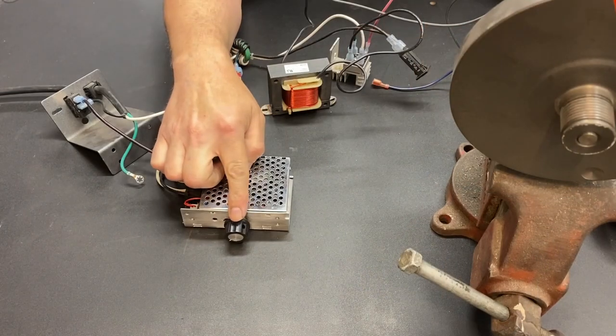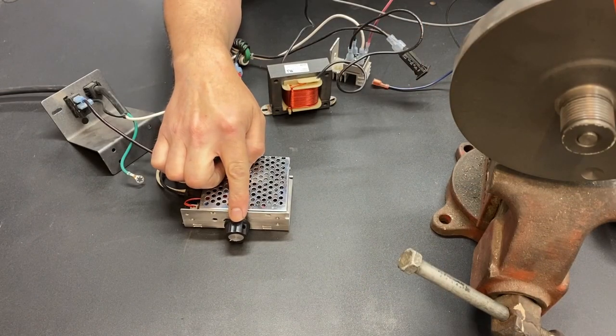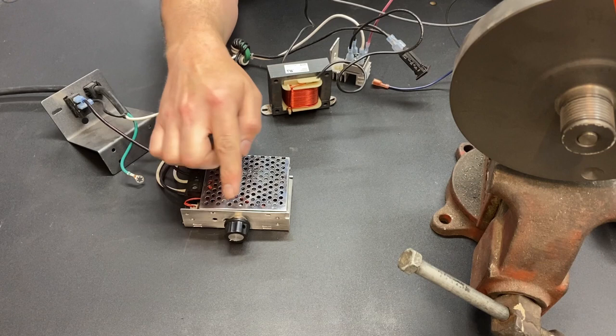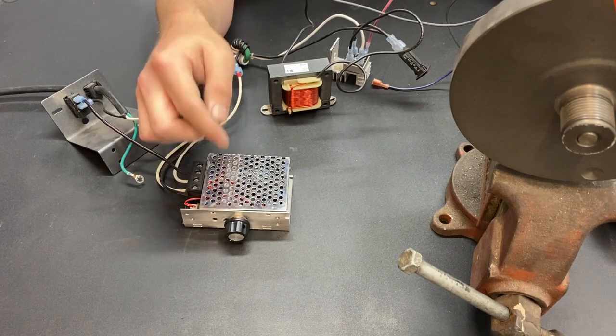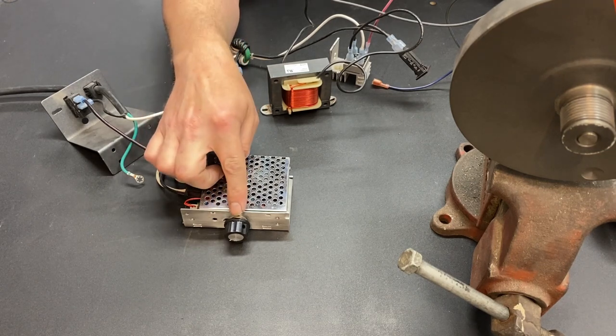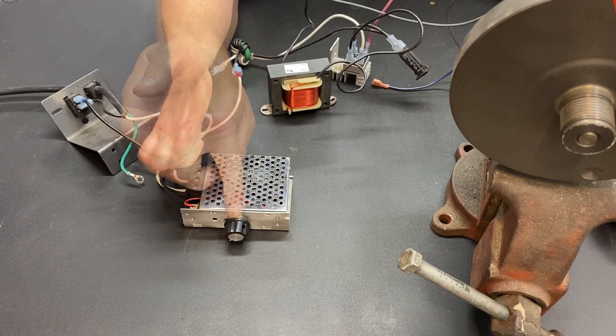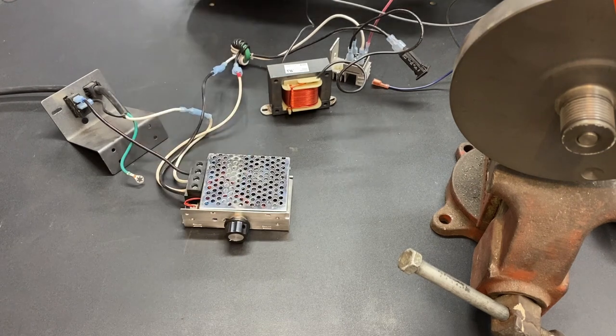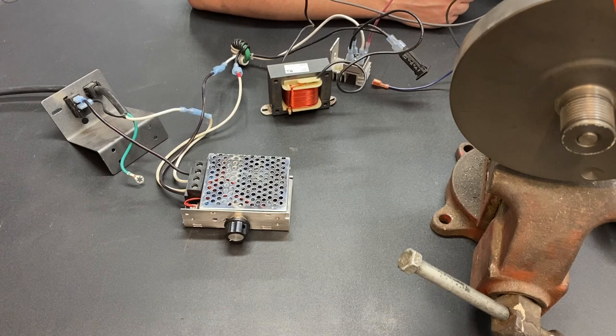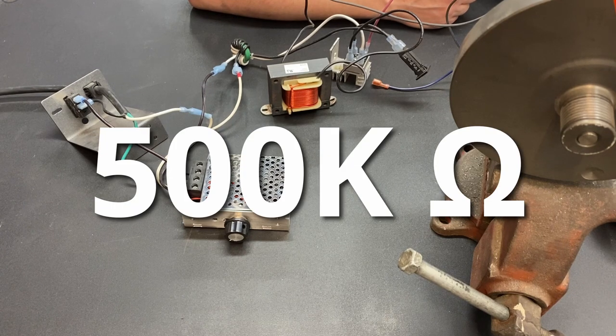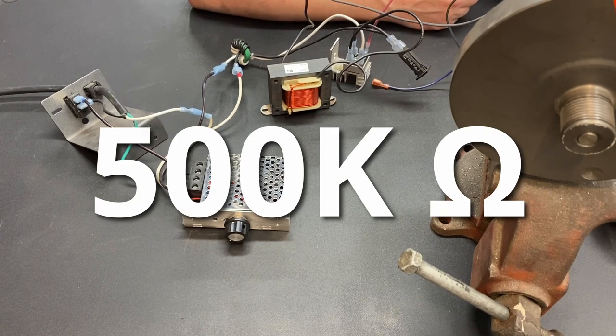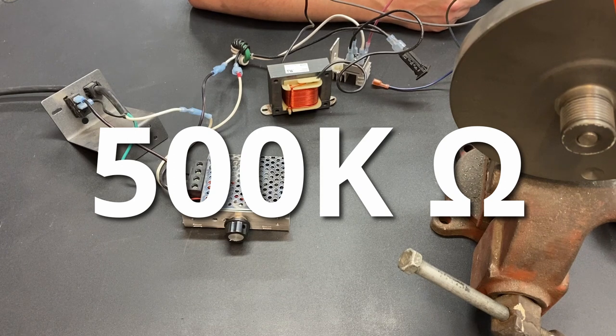A potentiometer is a variable resistor. What that means is, as you turn the knob, the amount of resistance that this component supplies changes. The potentiometer that comes in this unit is typically a 500 kilo-ohm potentiometer. Now, when you look on the back, you'll see 500 K.